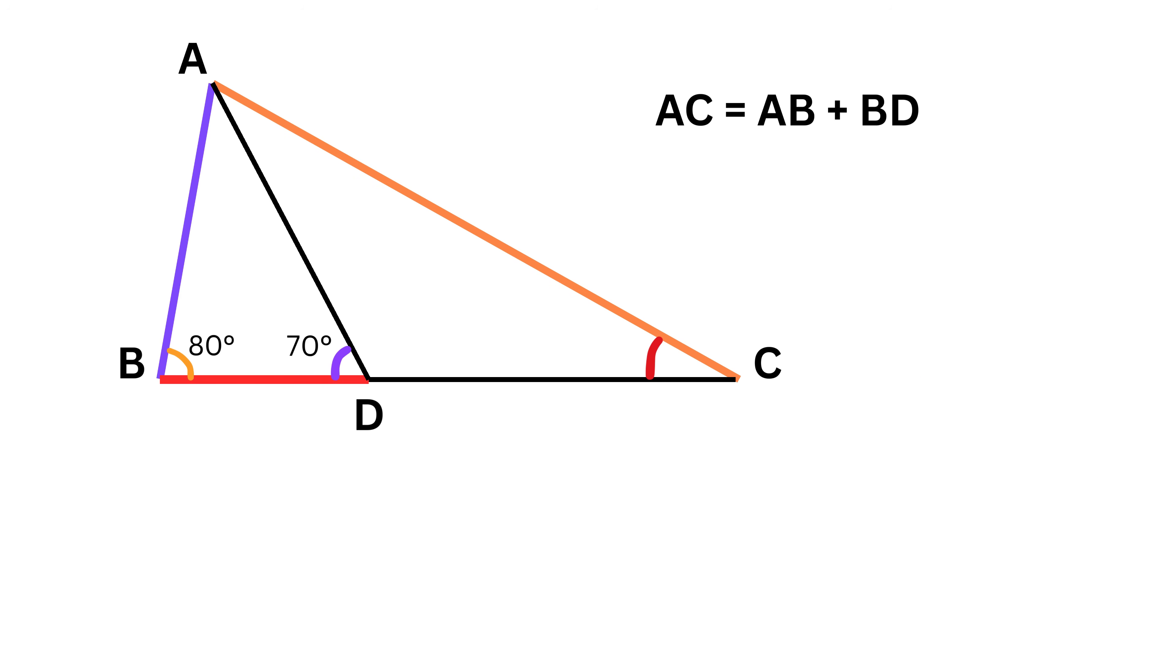First, we mark the angles that we can easily find. We know that the sum of all angles in a triangle is equal to 180 degrees. The sum of both these angles equals 150 degrees, therefore this angle turns out to be equal to 30 degrees.